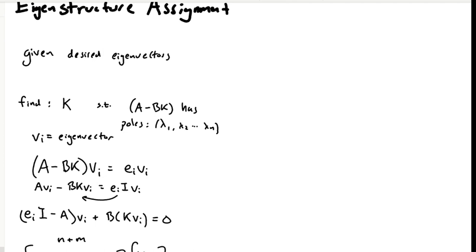Let's say we have a set of desired eigenvalues, and we're going to pick a gain matrix K for them. We don't know K yet, and we don't know the eigenvectors of the final system yet, but we do know that when we multiply A bar and the i-th eigenvector, we should get the i-th eigenvalue times that eigenvector, which means that EI times VI minus A minus BK times VI equals zero.